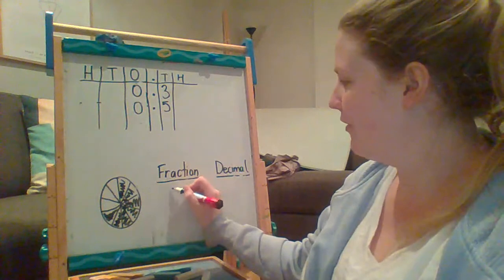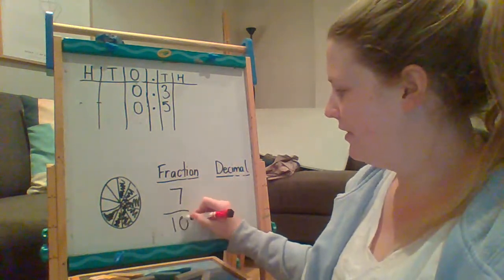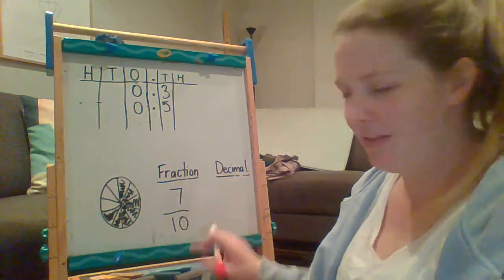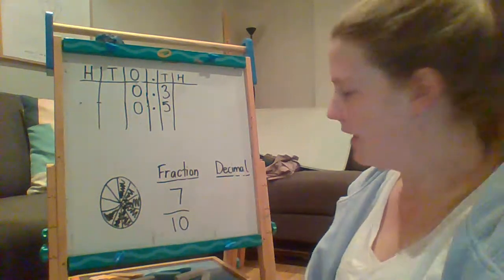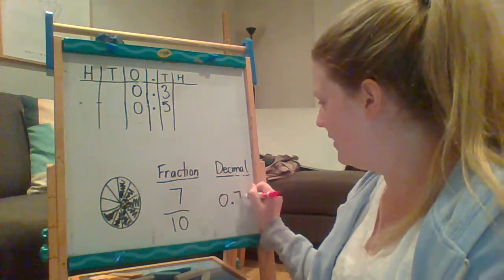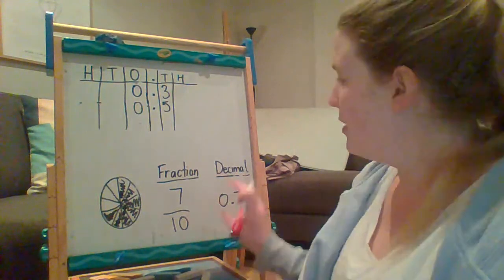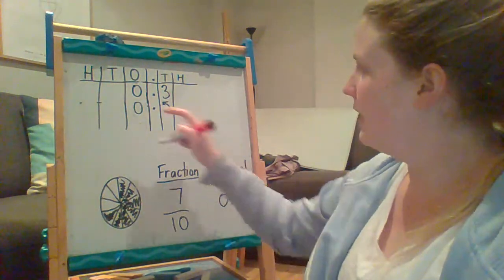All right, so as a fraction, it would look like a seven over a ten, seven tenths. What would that look like as a decimal? If I had seven tenths, zero, a decimal point, and a seven, just like we've been doing the last two slides. But we're now just showing this number in a table.